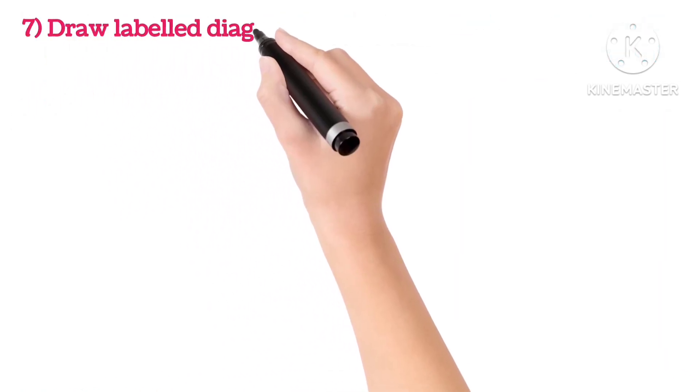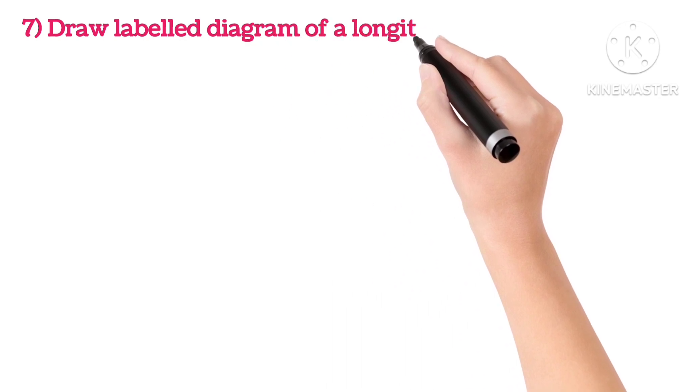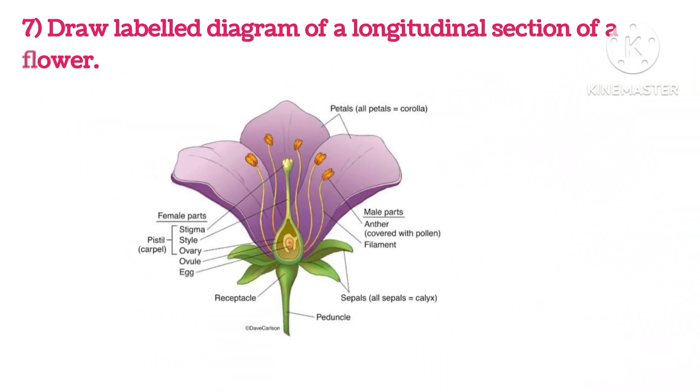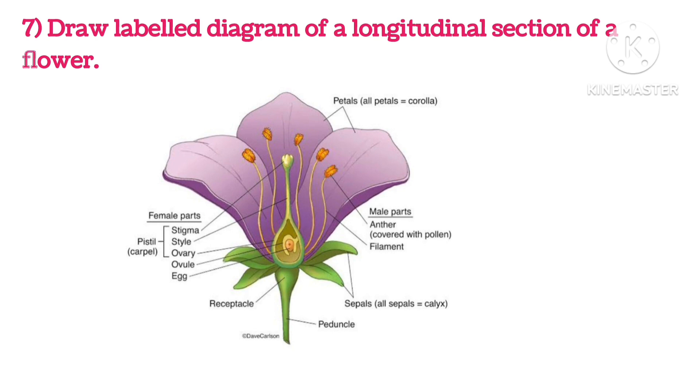Seventh: Draw a labeled diagram of the longitudinal section of a flower. You can see the diagram here.